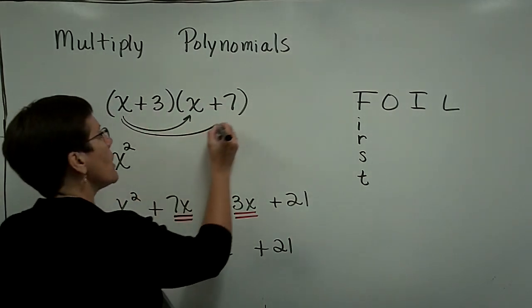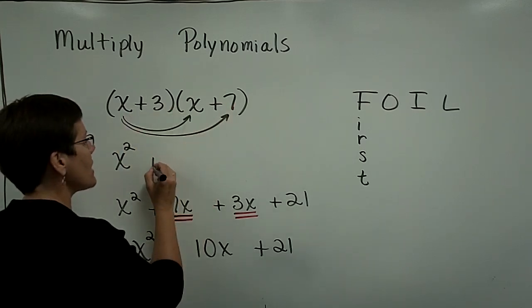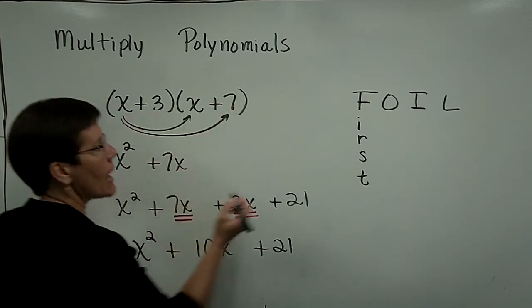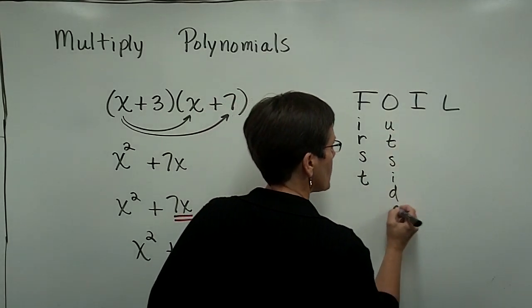Next, it says multiply the outside terms. x times a positive 7 is a positive 7x. So you multiply the outside terms together.